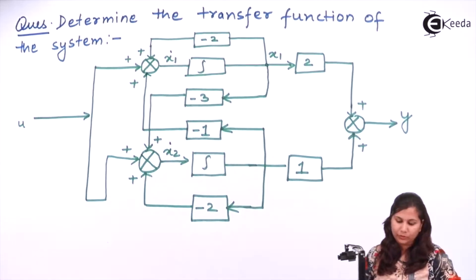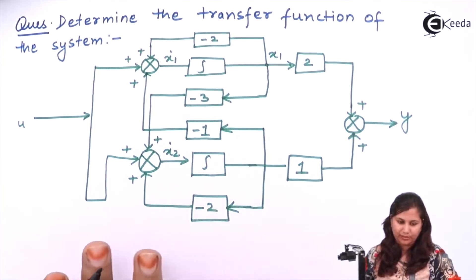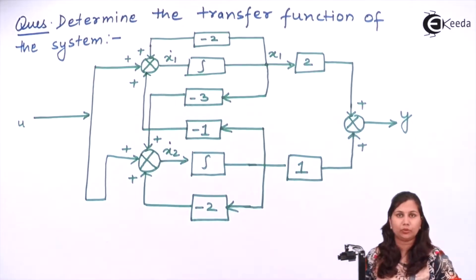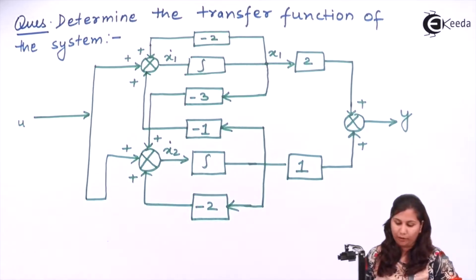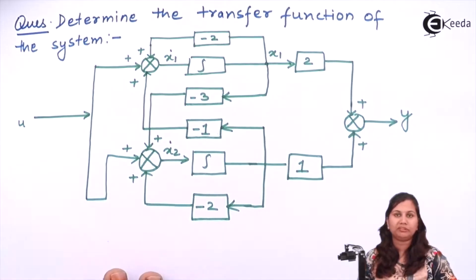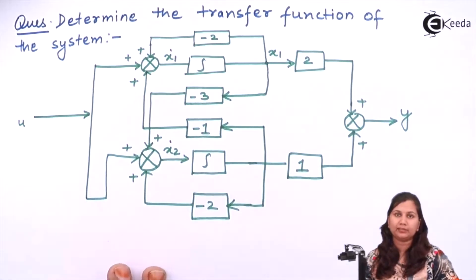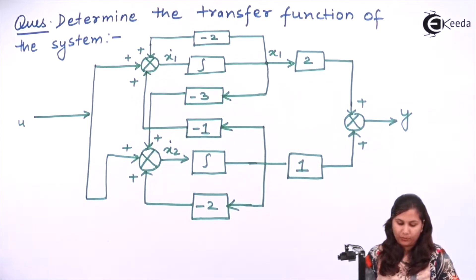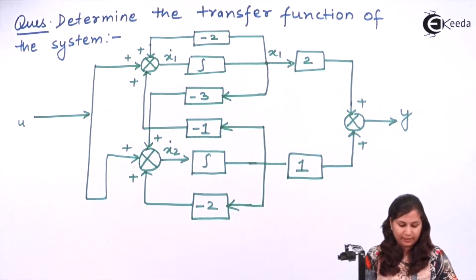Our problem is to determine the transfer function of this system. The block diagram of the system is given to us. From this block diagram, we have to determine first the state model, and from the state model we will determine the transfer function. So let's start solving this problem.